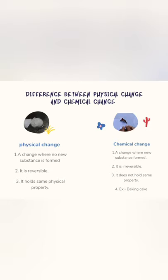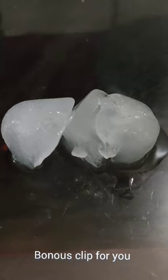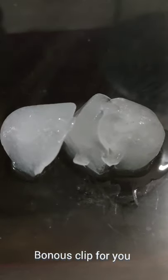Let's see the difference between chemical and physical changes. In a chemical change, a new substance is formed; in a physical change, no new substance is formed. A chemical change is irreversible — we cannot get back the original substance — but in a physical change, we can get back the original substance. Write down in the comment section examples of chemical changes, and thank you for watching till the end!